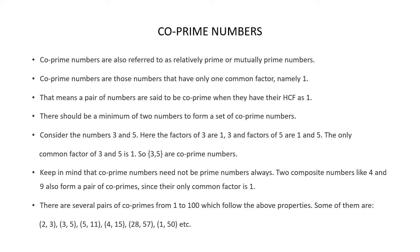There are several pairs of co-prime numbers from 1 to 100. Some of them are: 2 and 3, 3 and 5, 5 and 11, 4 and 15, 28 and 57, 1 and 50, etc. All these pairs have one thing in common — their common factor is 1. The common factor of 2 and 3 is 1, common factor of 3 and 5 is 1, common factor of 5 and 11 is 1, and so on.